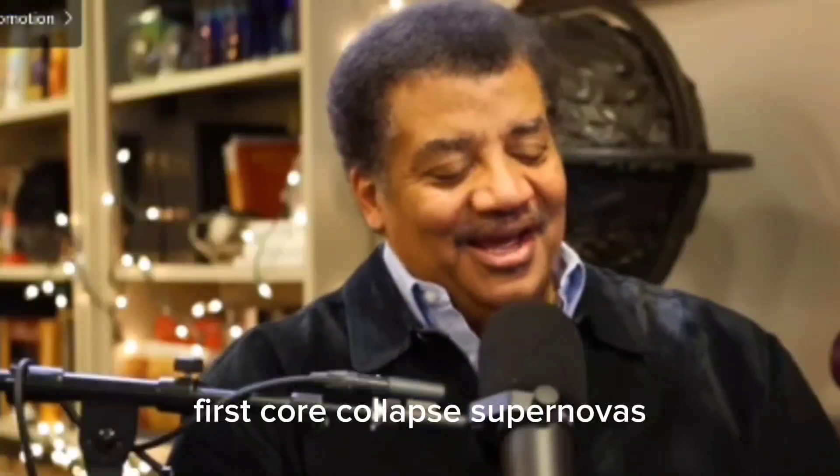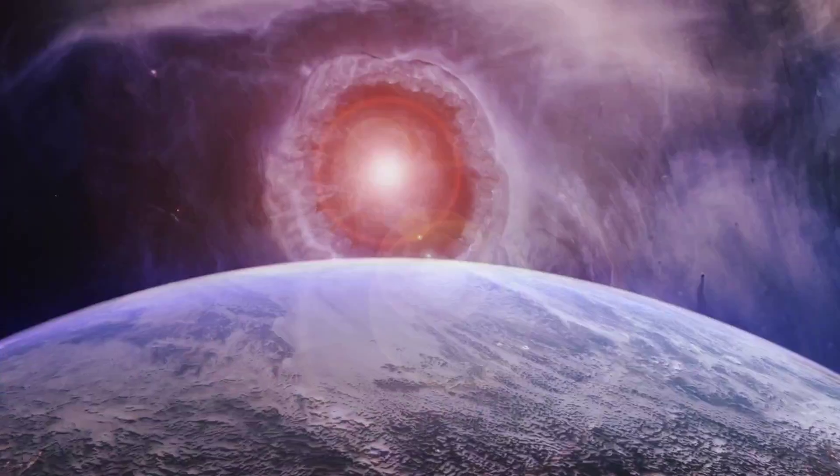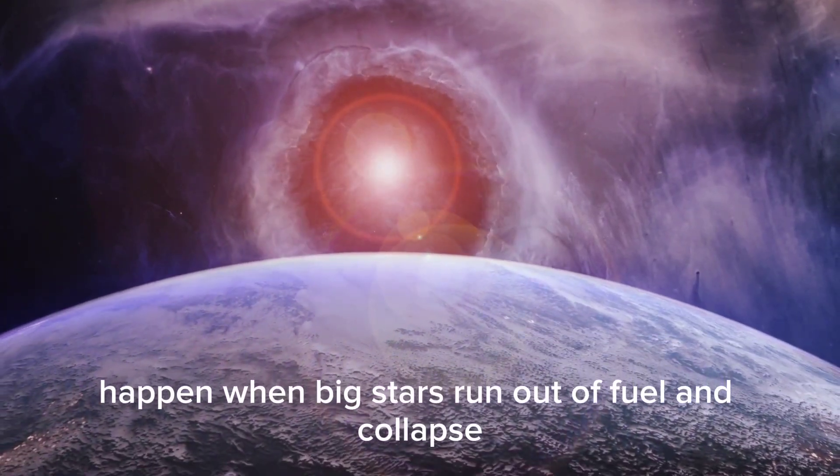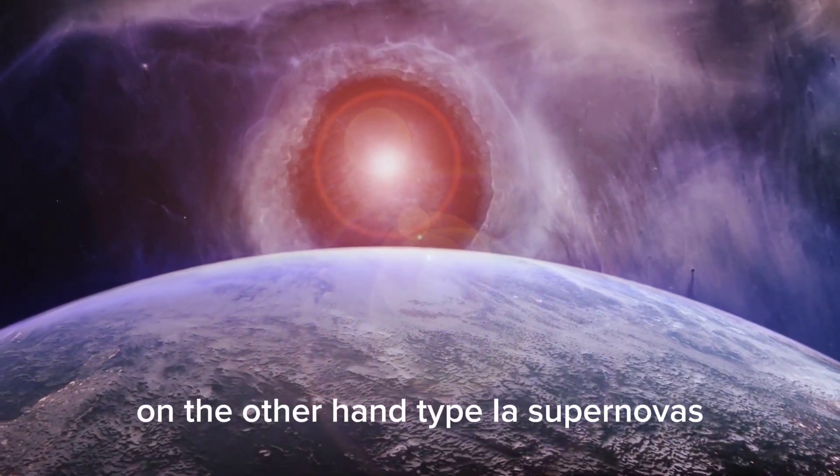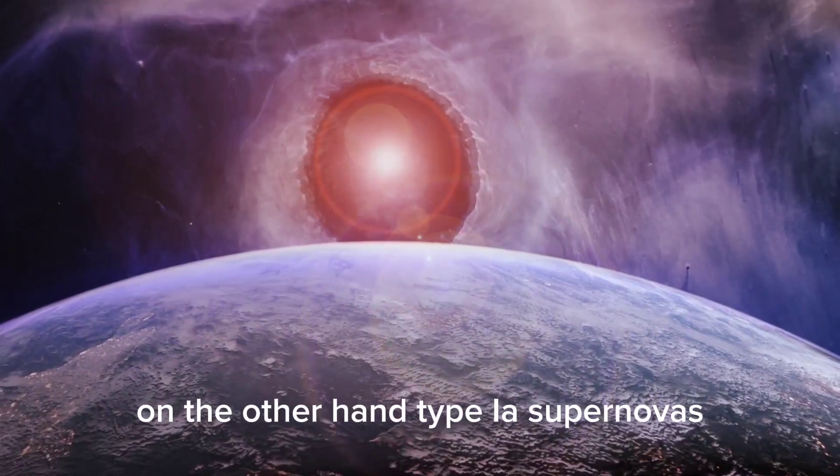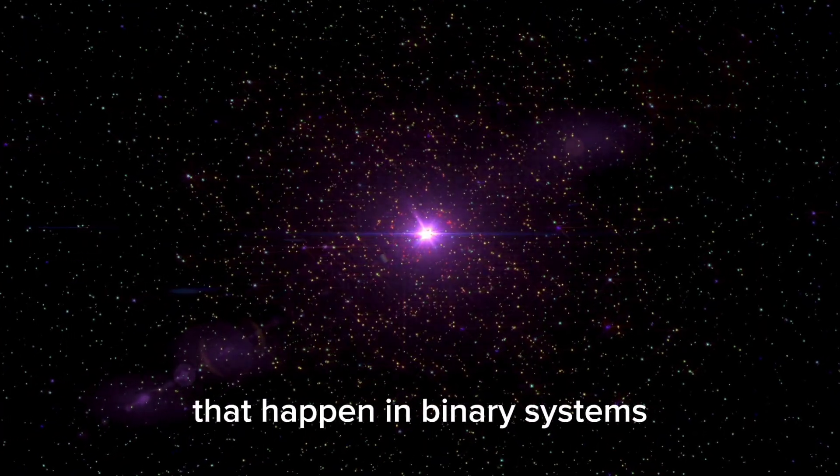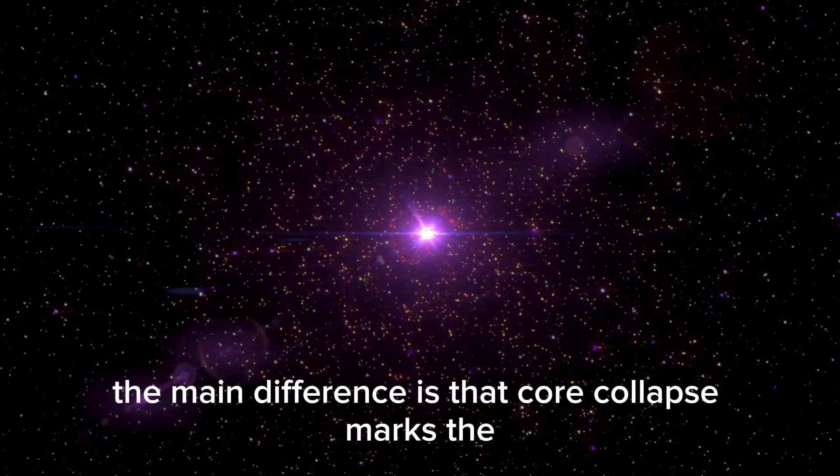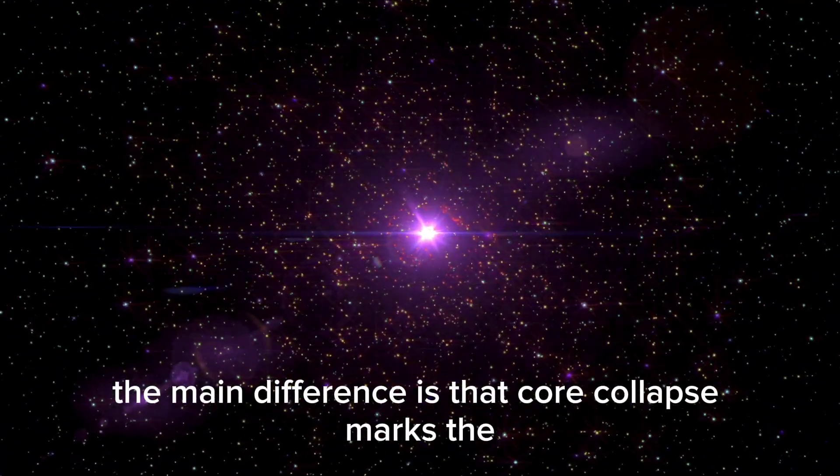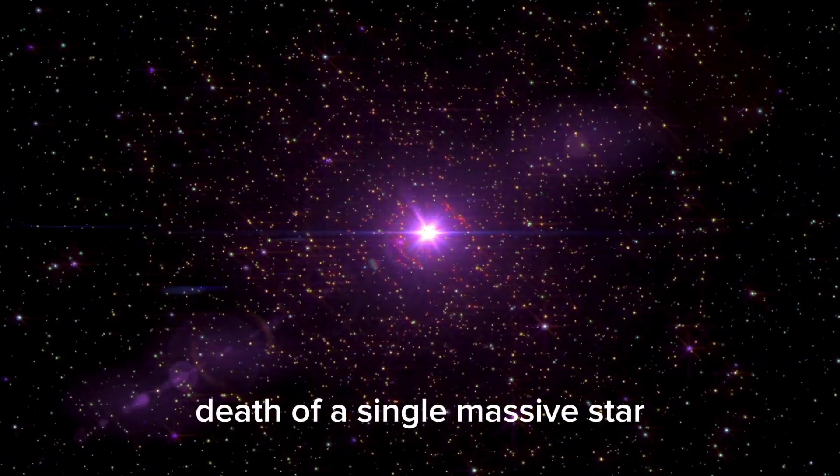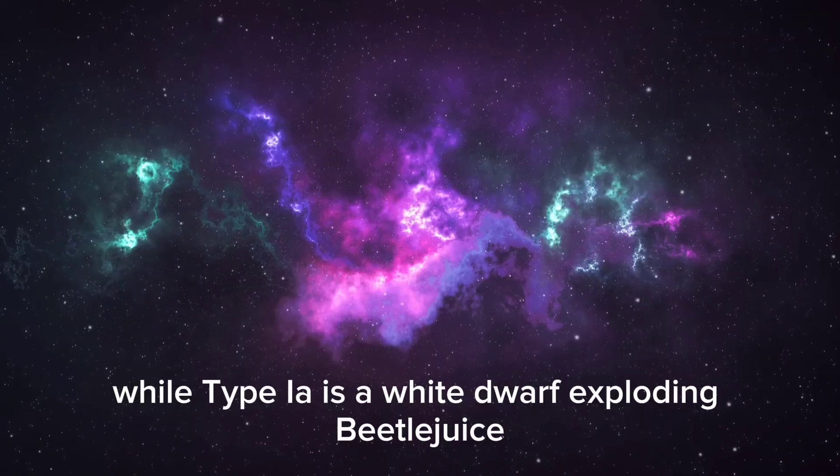Supernovas generally fall into two groups. First, core-collapse supernovas, types 2, IB, and IC, happen when big stars run out of fuel and collapse. On the other hand, type IA supernovas are explosions of white dwarf stars that happen in binary systems when they gather too much mass. The main difference is that core collapse marks the death of a single massive star, while type IA is a white dwarf exploding.